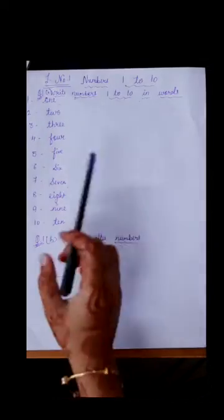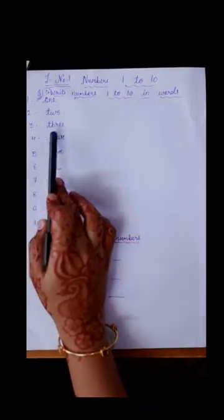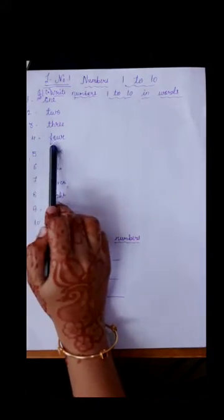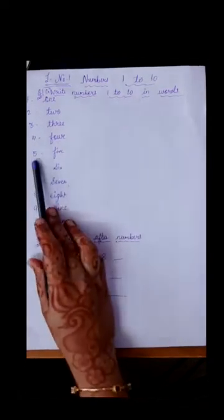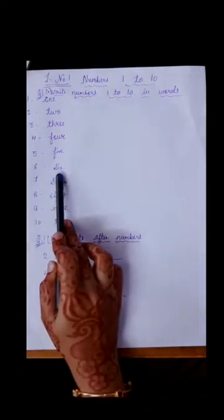Two: t-w-o. Three: t-h-r-e-e. Four: f-o-u-r. Five: f-i-v-e. Six: s-i-x.